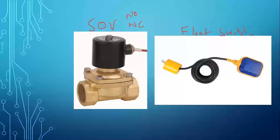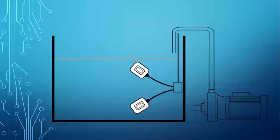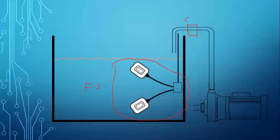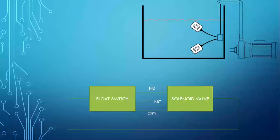We also need a float switch — these two items are needed to make our circuit. Consider one tank: the motor supplies water through a pipe, and we place one solenoid valve on this pipe. When the float switch rises from the lower point to the upper point, it will turn off the supply so the water will not overflow.